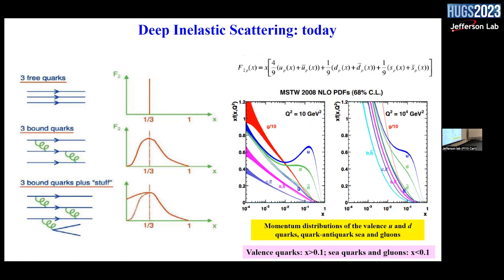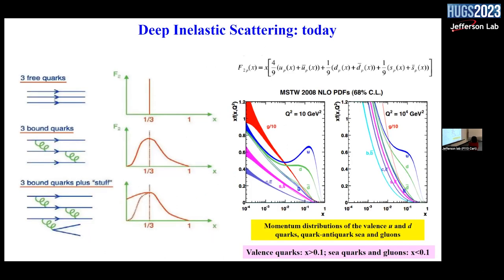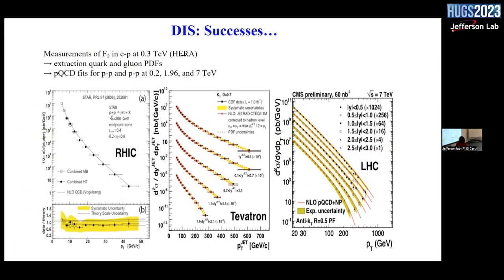Student question about the momentum distribution plots. The speaker explains: if we had only non-interacting constituent quarks, the U quark bump should be a delta function at one-third. The exchanges of gluons and creation of quark–antiquark pairs smear the momentum distribution and produce the additional bump toward small values of X — which is what is observed.